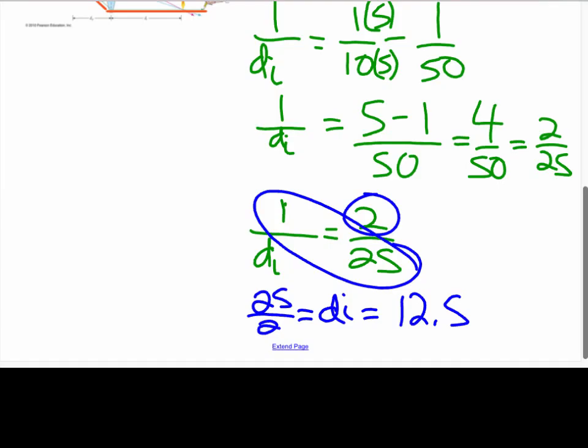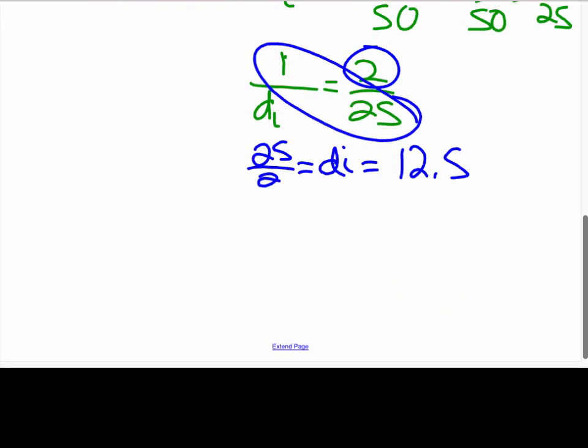Alright. So now we've got to do the magnification. And this is all in centimeters, right? Yeah. So now the magnification, who knows the formula for that? DI over DO. You're half right. Negative. Negative DI, right? So it's negative DI over DO.